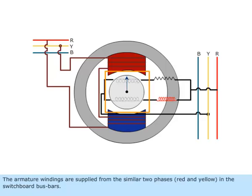The armature windings are supplied from the similar two phases, red and yellow, in the switchboard busbars.